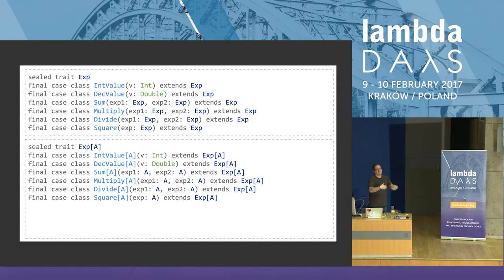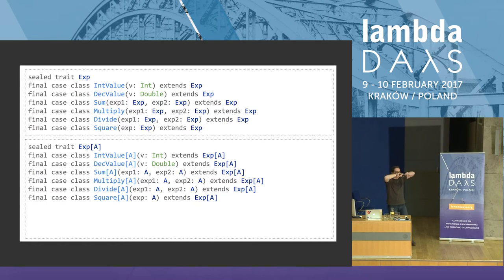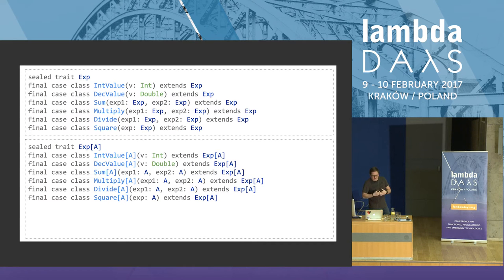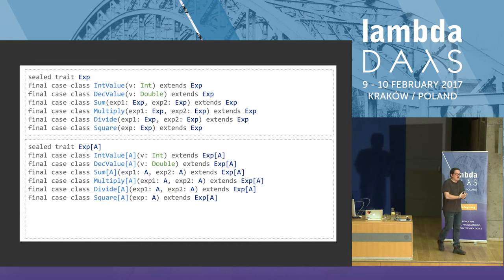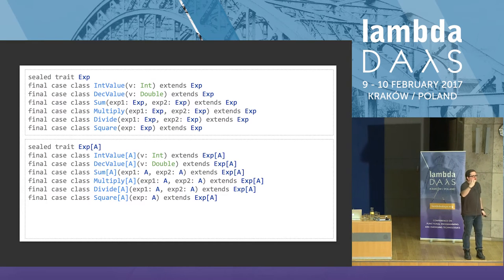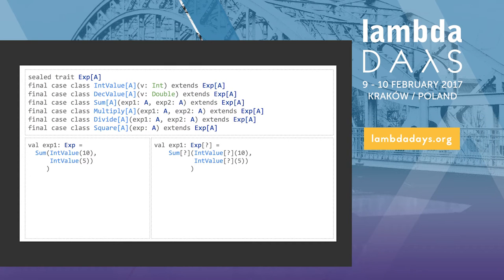This allows us to write that evaluate function working on expressions parameterized by double. But we've also introduced a problem: we originally had this structure to represent recursive expressions. With the new polymorphic definition, what do I put in A to represent the original recursive structure? If I put expression itself as A, then sum has to be parameterized by expression of unit, so my overall type becomes expression of expression of unit. And for a deeper structure, expression of expression of expression of unit — which is weird but compiles.